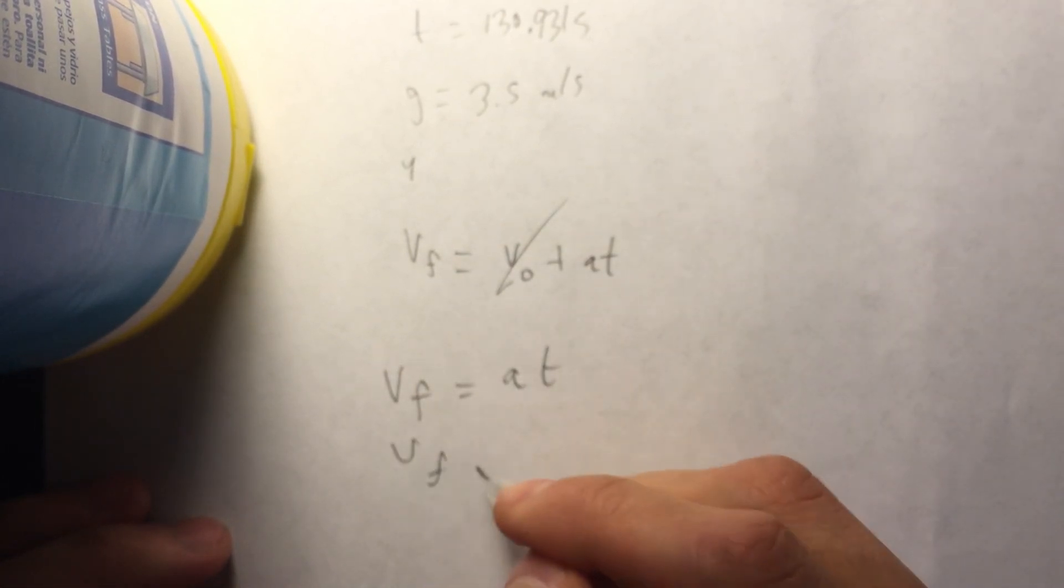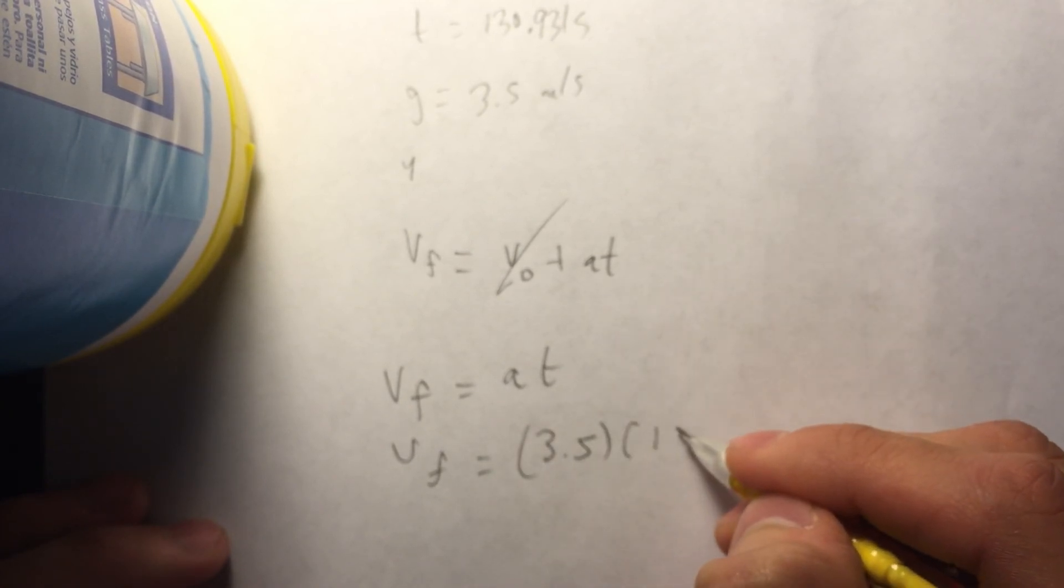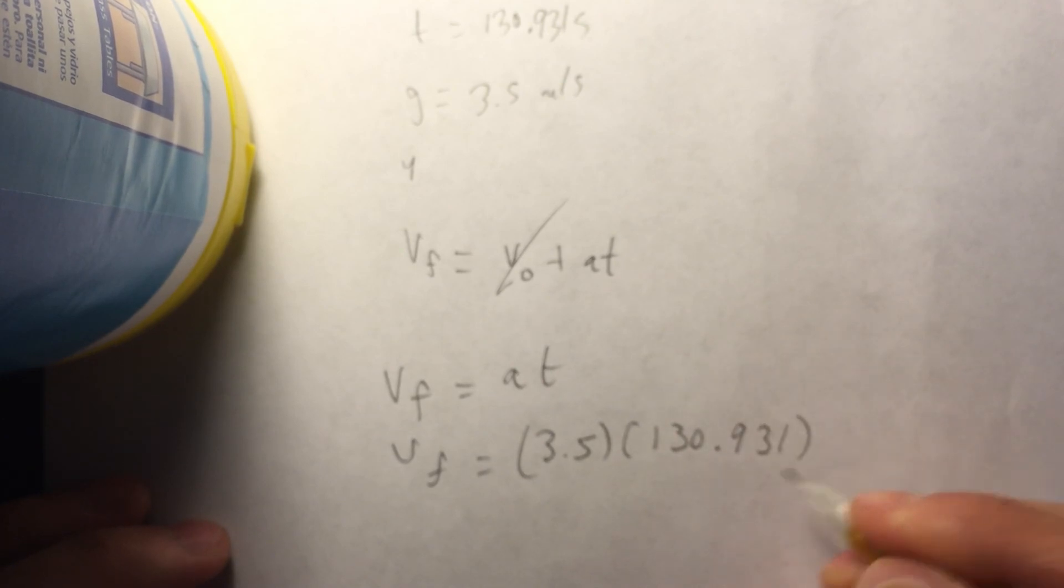So, v-final equals 3.5 times our given time, which we found that out in the first problem, 130.931 to give us a final velocity of meters per second.